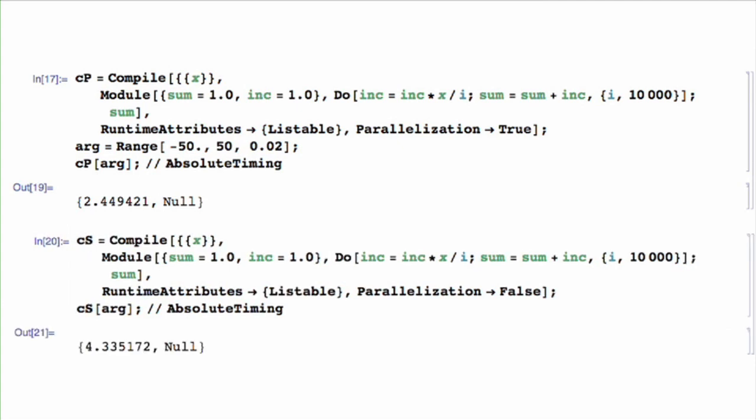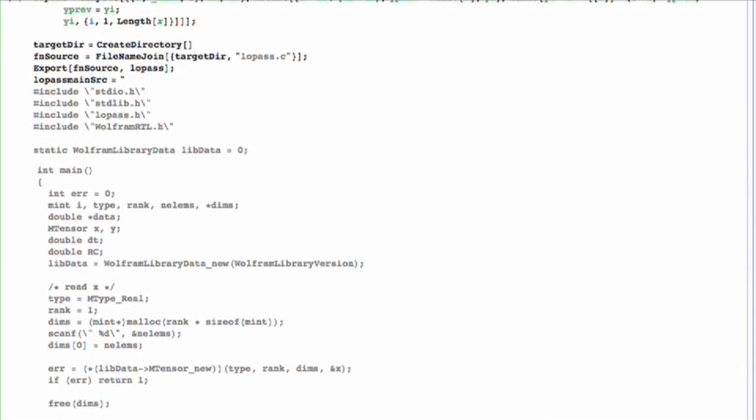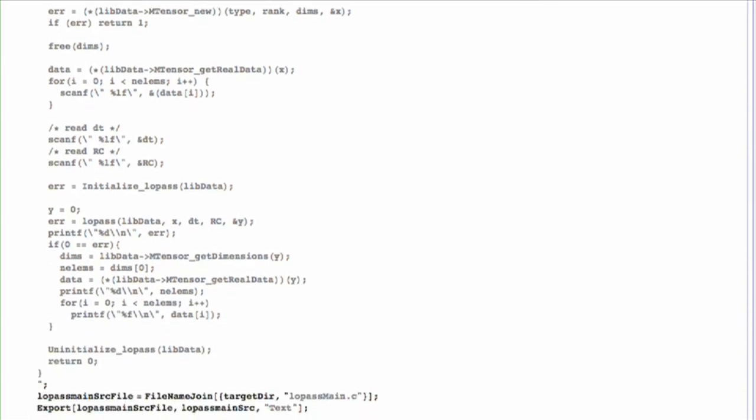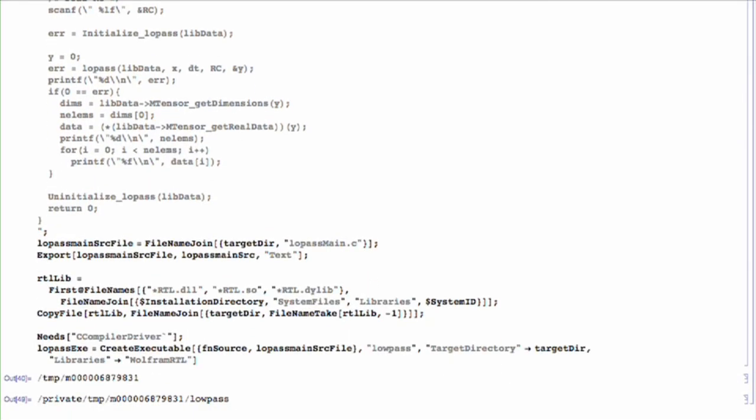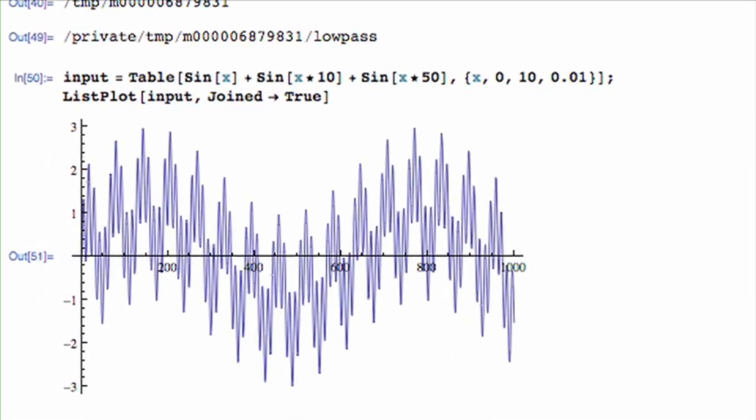So the code generator is useful in this automatic linking back into compile, but there's another way that it's useful, and that is to use it totally outside of Mathematica. So you can generate a program, a C program or a C library, based on your Mathematica functions, but it executes outside of Mathematica.